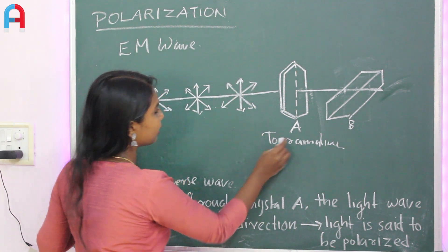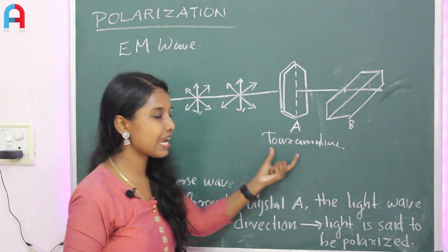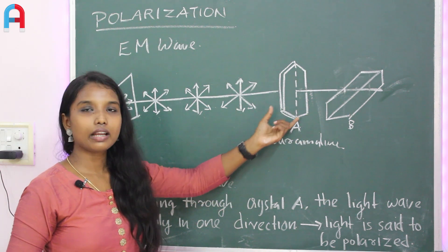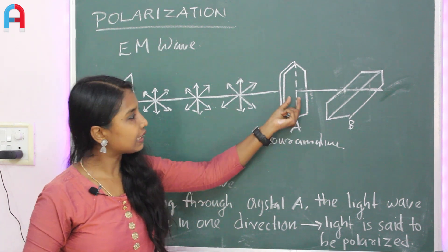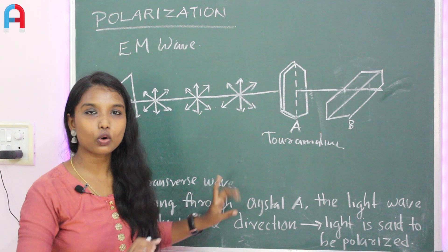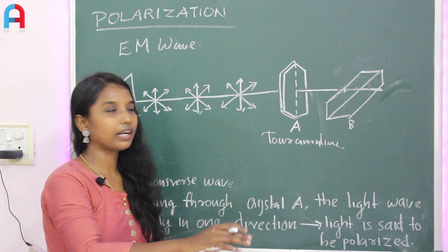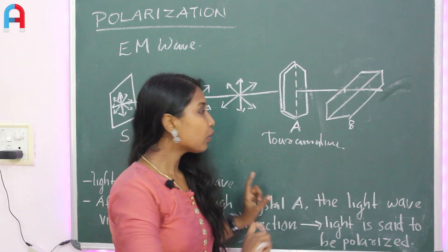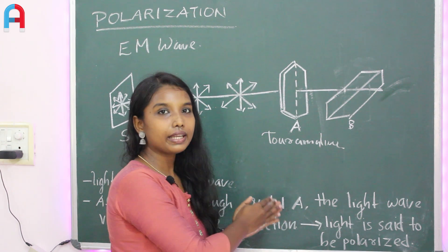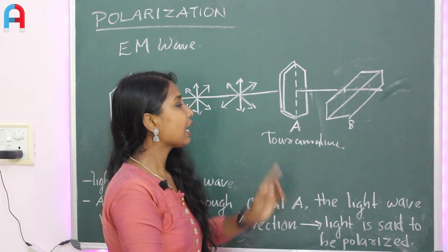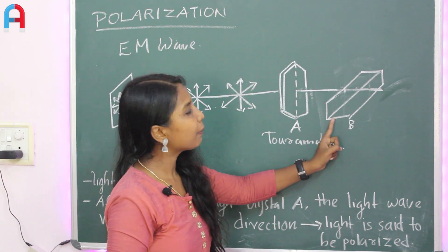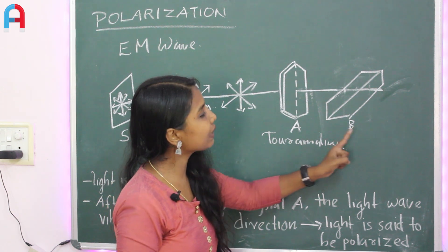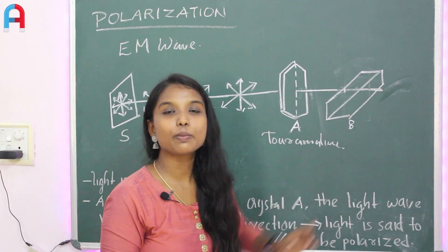The light from the source passes through crystal A, which is called a tourmaline crystal. The light is then incident on crystal B. If A is fixed and B is rotated, the intensity of light emerging from B varies. When A is perpendicular to B, no light comes out from B.